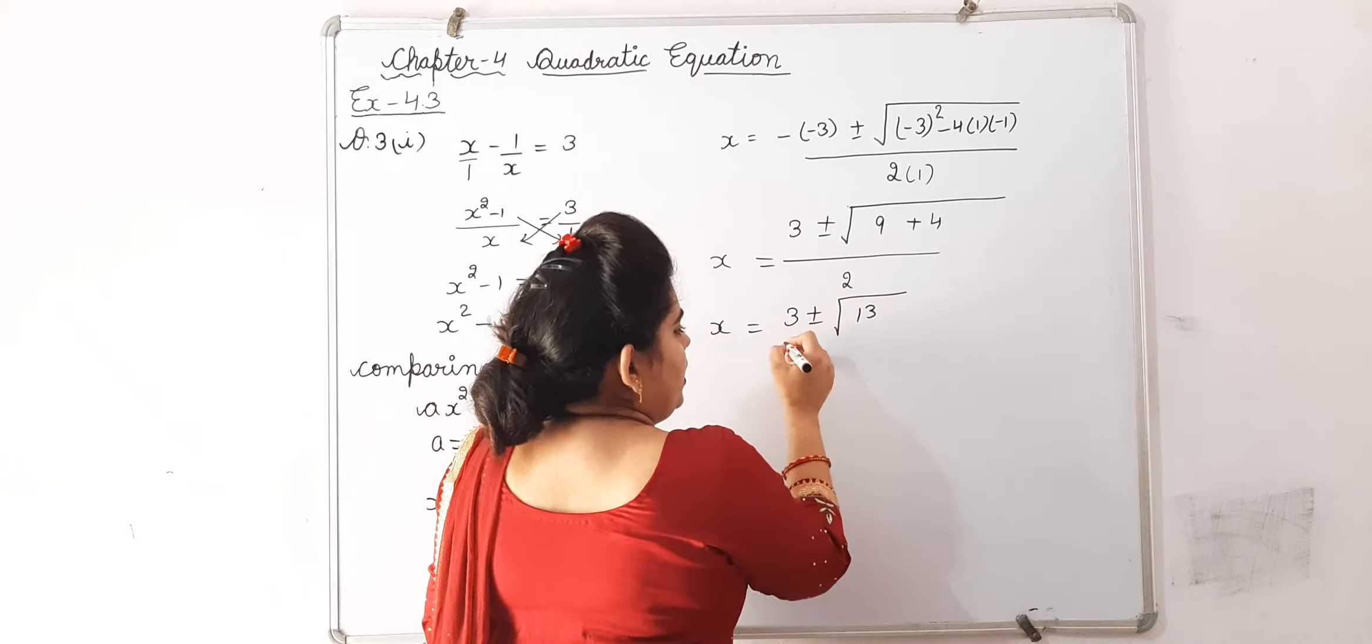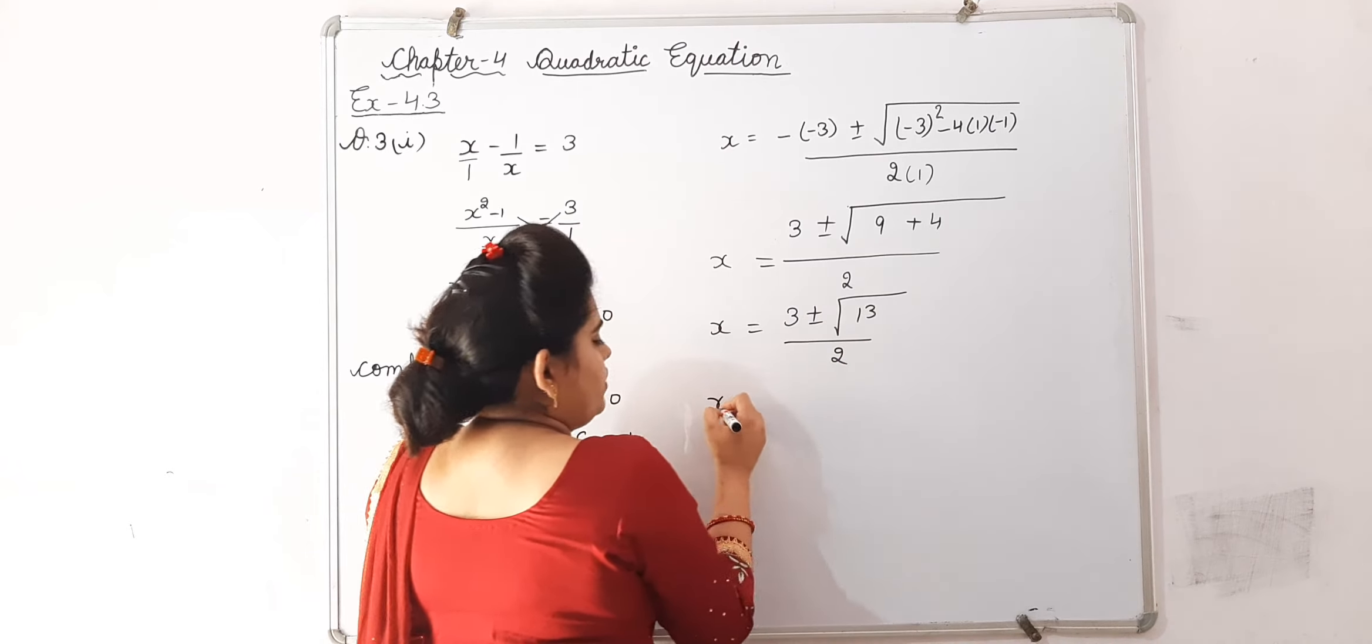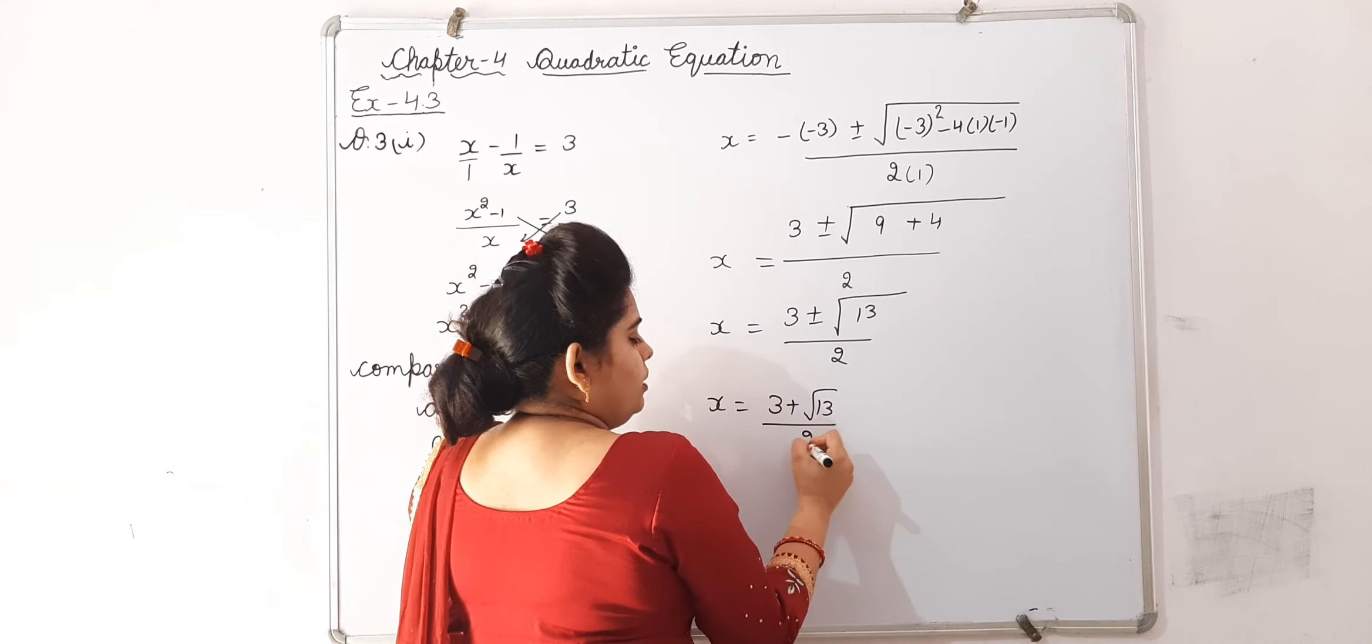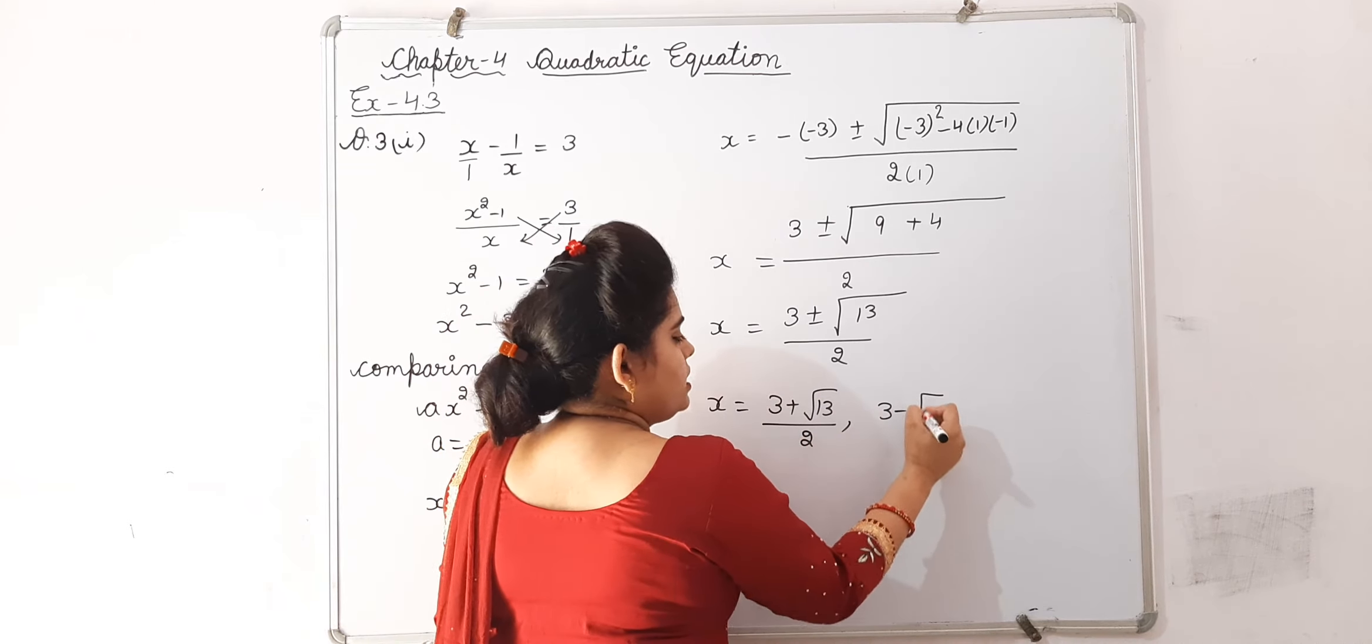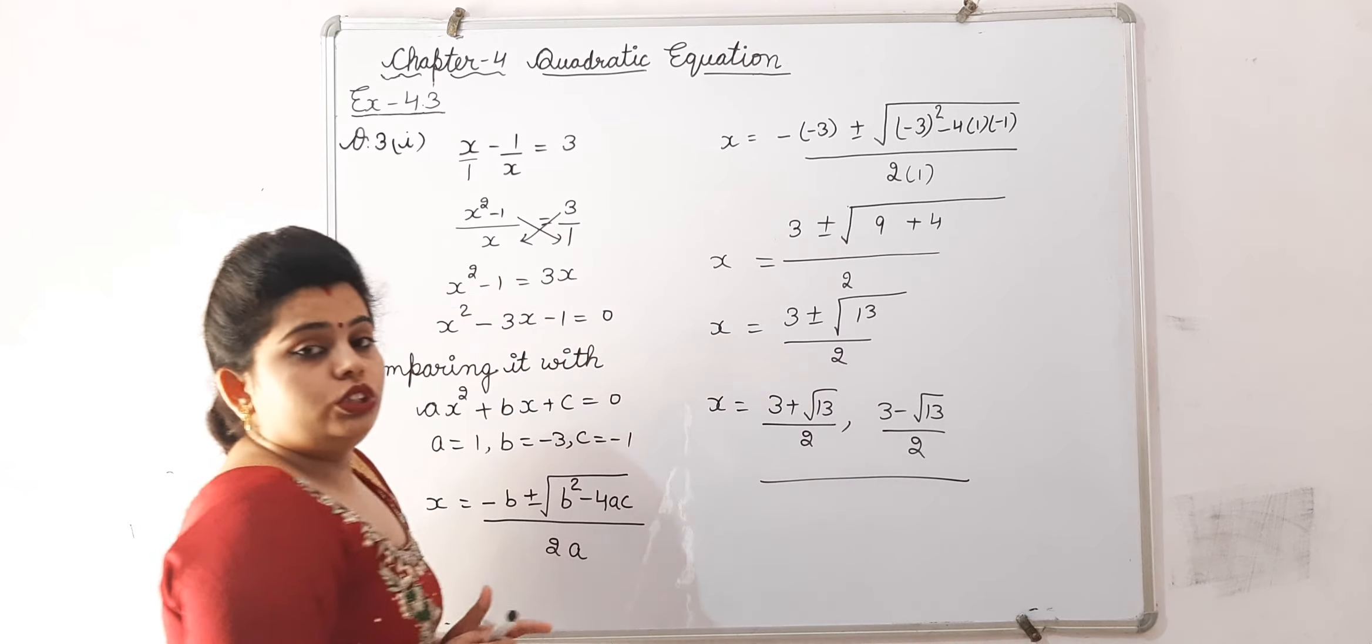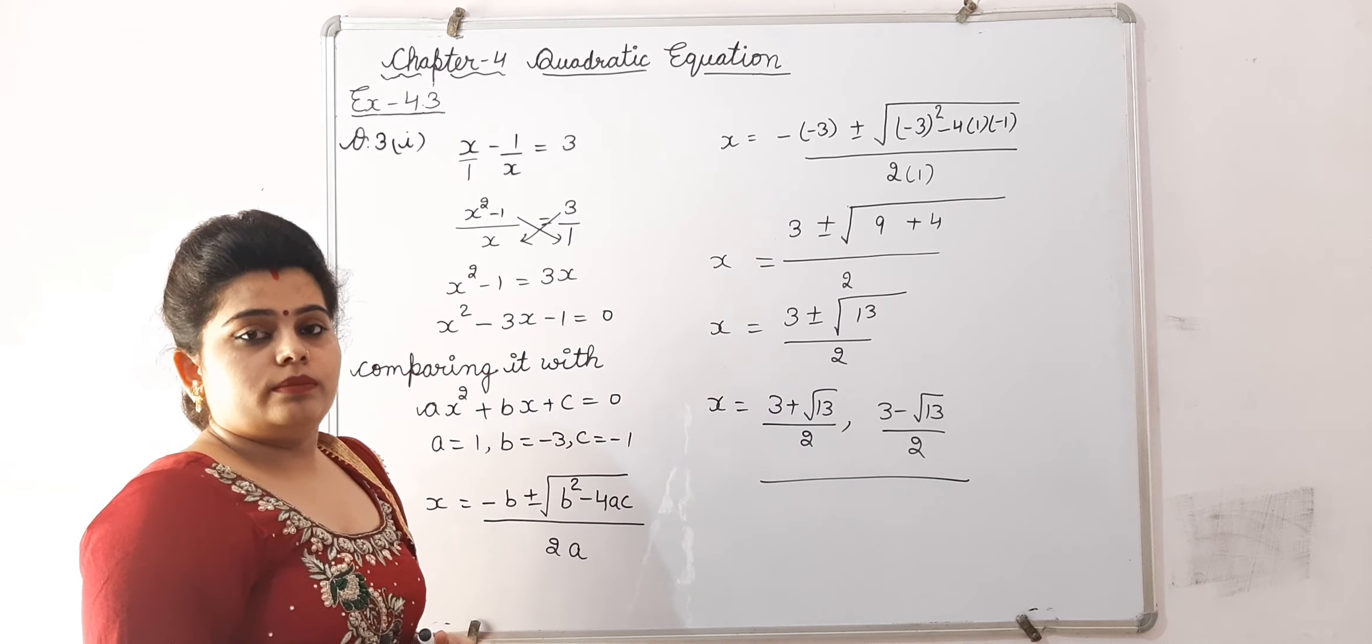It is the value of x, and x is equal to 3 plus minus root 13 divided by 2. So, values of x are 3 plus root 13 by 2 and 3 minus root 13 by 2. These are the solutions of this equation. Thank you.